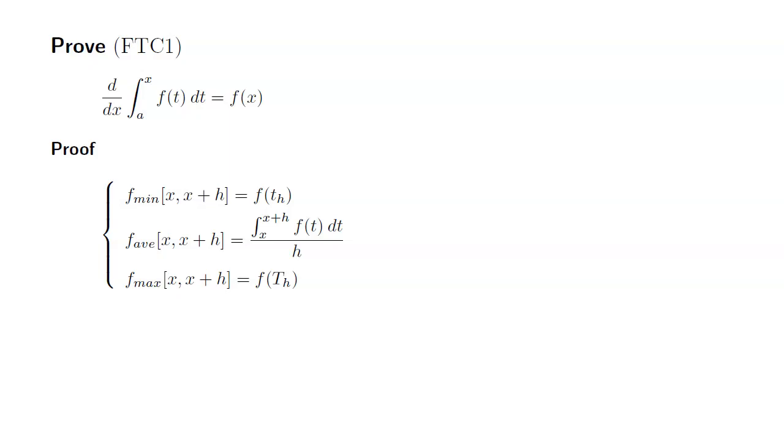All right, so what happens to these values as h approaches zero? Let's look at the minimum value. f of t sub h approaches f of x, since t sub h approaches x, because t sub h has to be between x and x plus h, and h is approaching zero. All right, you can say the same thing about the maximum. f of capital T sub h approaches f of x, since capital T sub h approaches x.